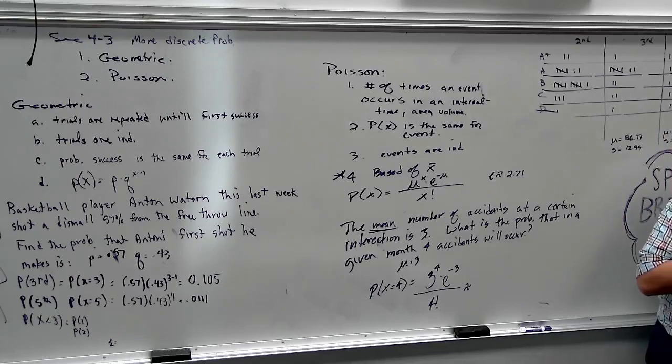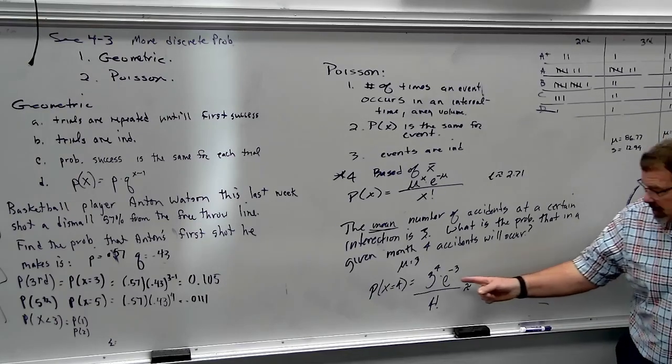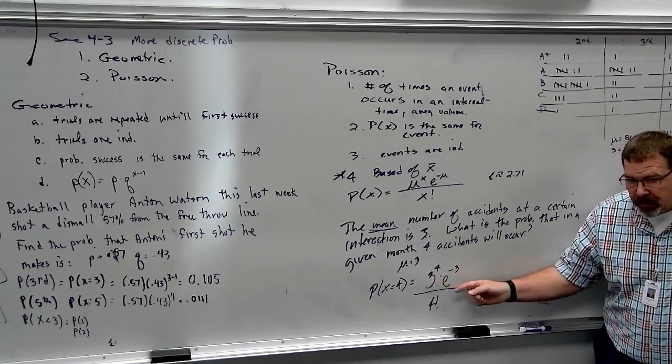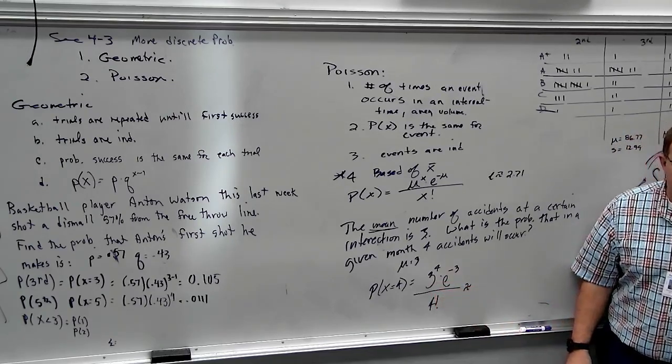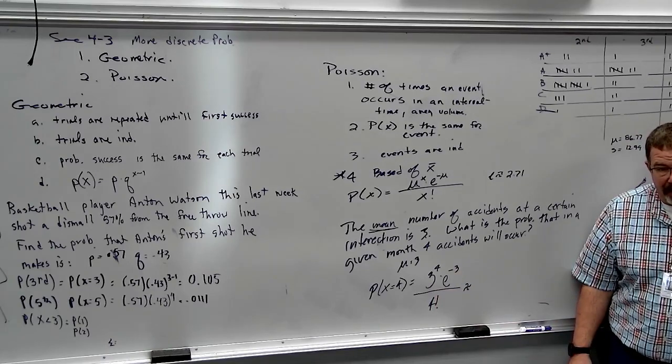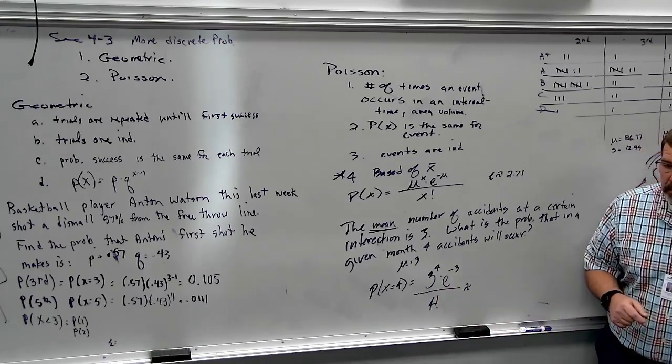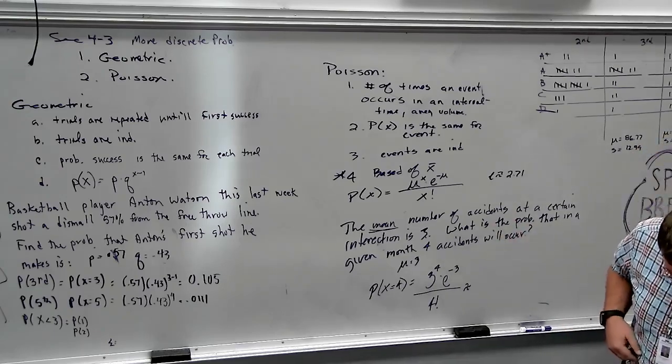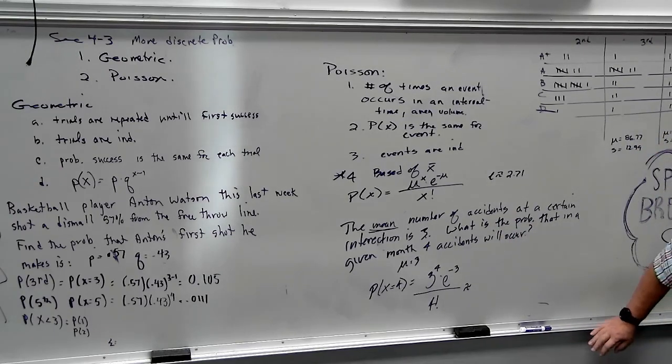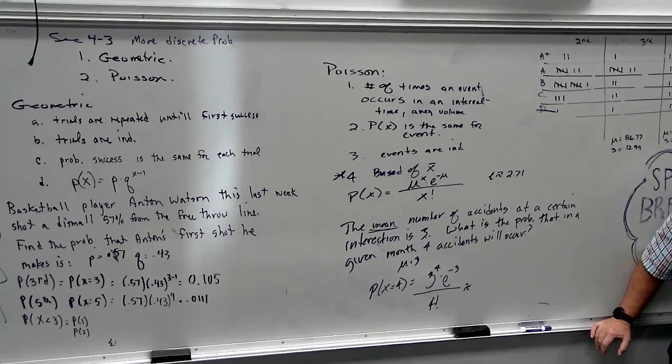So, it's going to be 3 to the fourth power times E to the negative 3 all over 4 factorial. Now, what I would do if I were you, when you enter this formula, since there's two things on the top, I would enter just the top and then hit enter. Then press divide 4 factorial. Take a minute. Run that through. Let's see what you get.